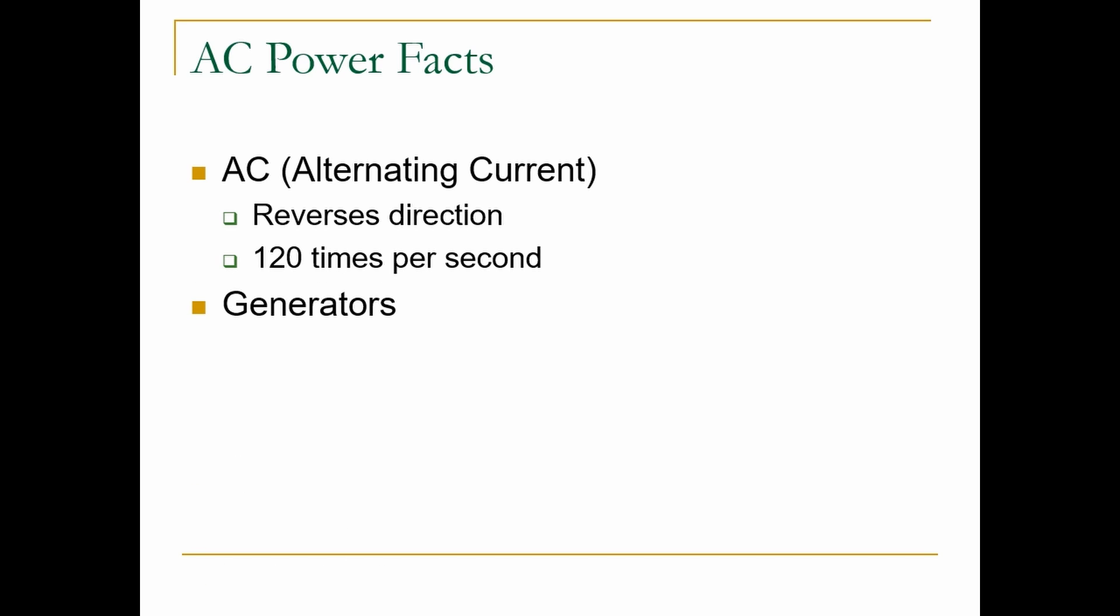Presently, AC power is produced by generators, whereas DC power is most commonly produced by batteries. It's possible to convert AC to DC using an inexpensive device called a diode, but the conversion from DC to AC is more complex and requires a device called an electrical inverter.